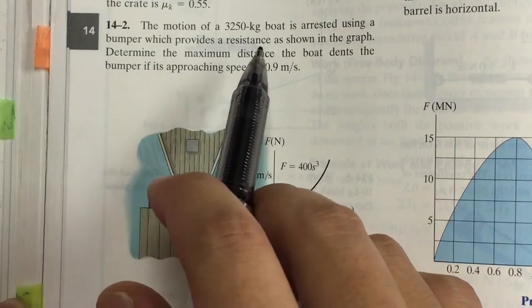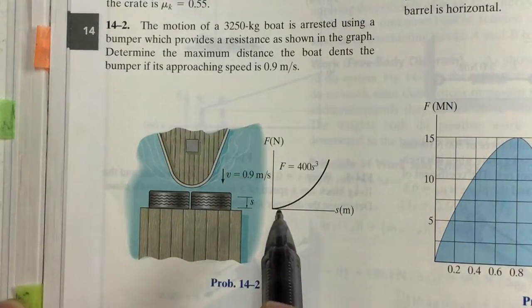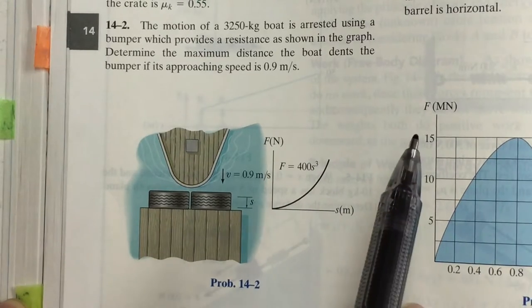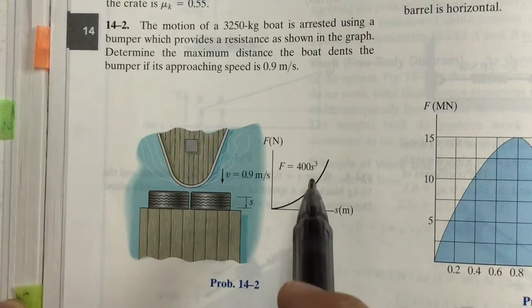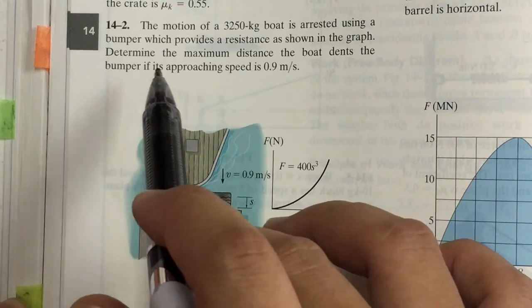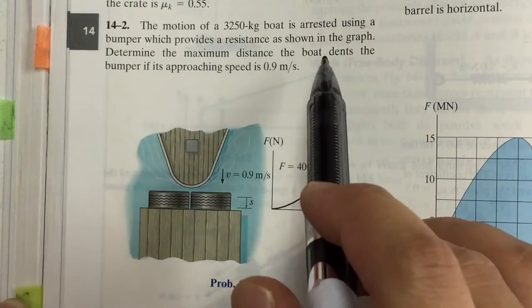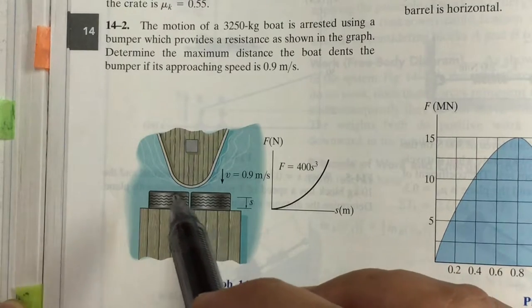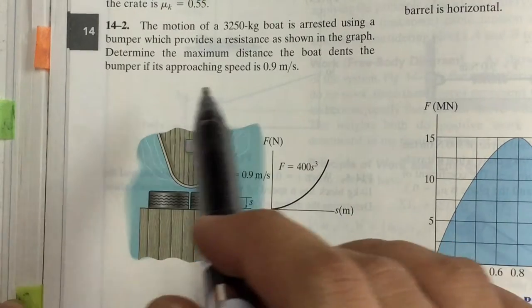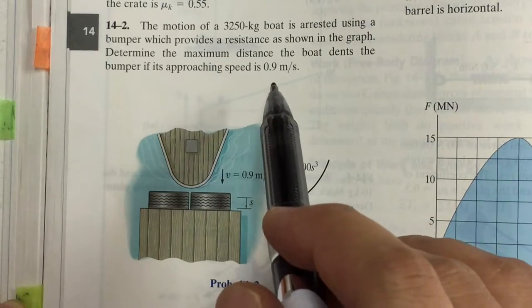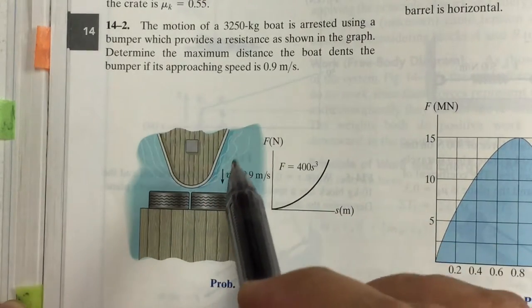So this is the resistance force experienced by the boat with respect to the distance. Determine the maximum distance the boat dents the bumper. So as the boat hits the bumper, it goes inward a little bit. Its approaching speed is 0.9 meters per second.